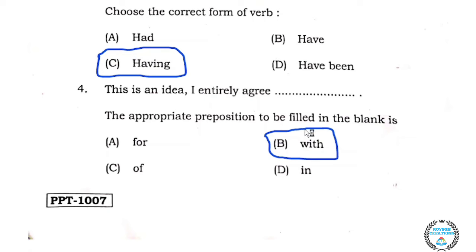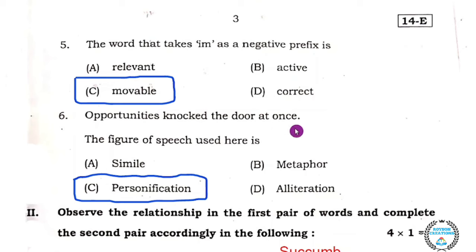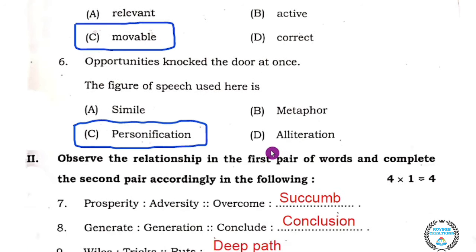The correct answer is option B. Question number six: 'Opportunities knocked the door at once.' The figure of speech used here is a dash — the correct answer is option C: personification.